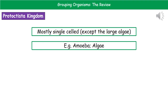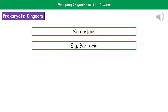Our next kingdom is the protoctista. These are mostly single-celled organisms, with the exception of the large algae. Examples include amoeba and the algae. The final kingdom is the prokaryotes. They have no nucleus — that's their key characteristic to remember — and the example is bacteria.